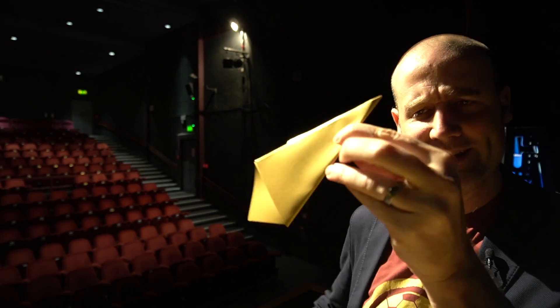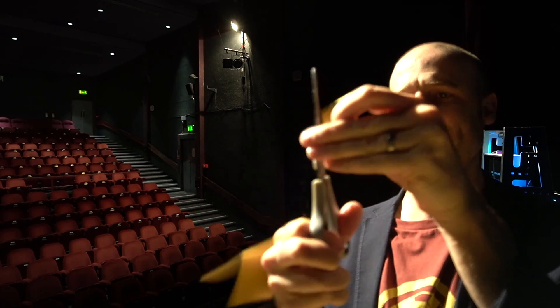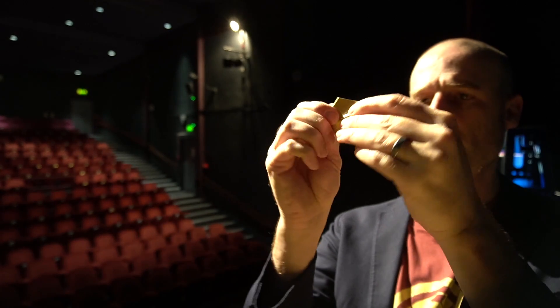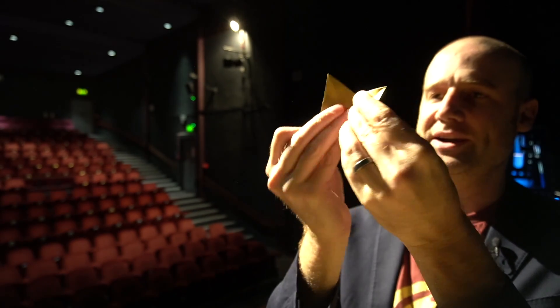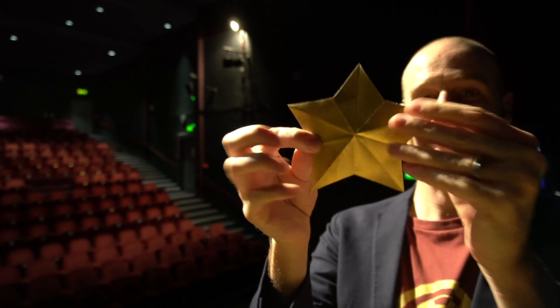What I've just done is kind of the classic fold and cut. That's where you make a single snip and when you unfold the shape you've got yourself a five-pointed star. Come on, there it is! Look at that!